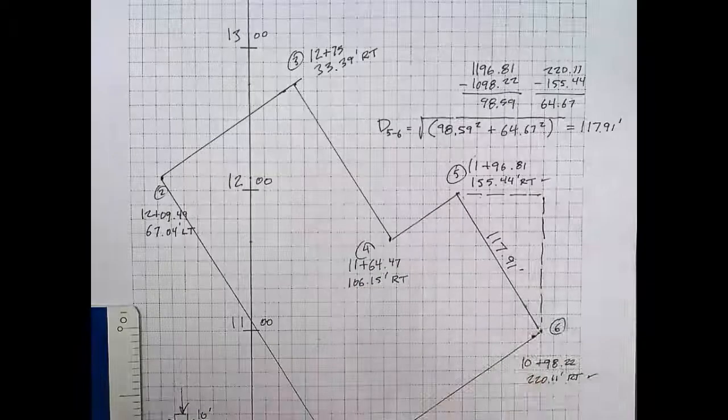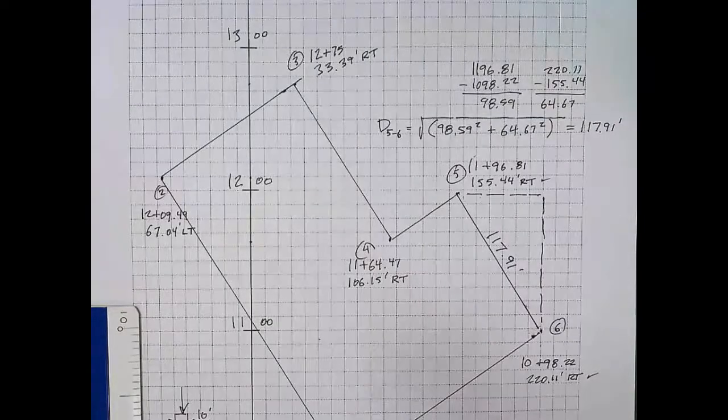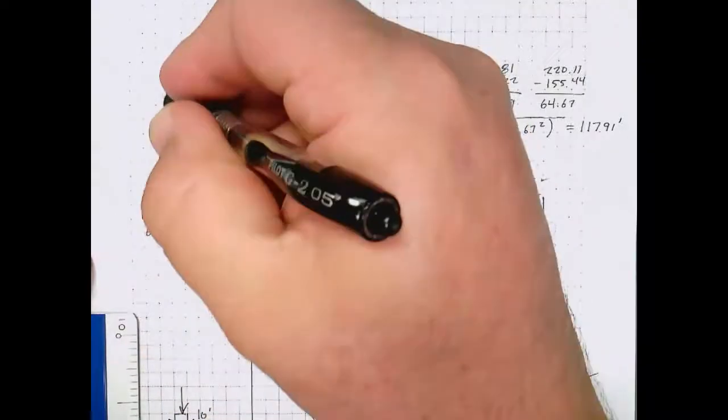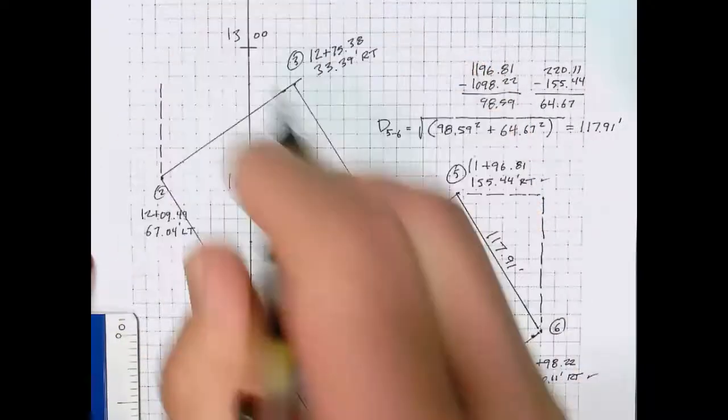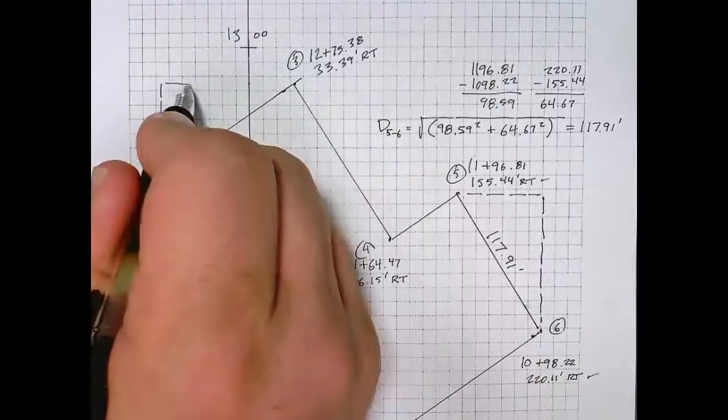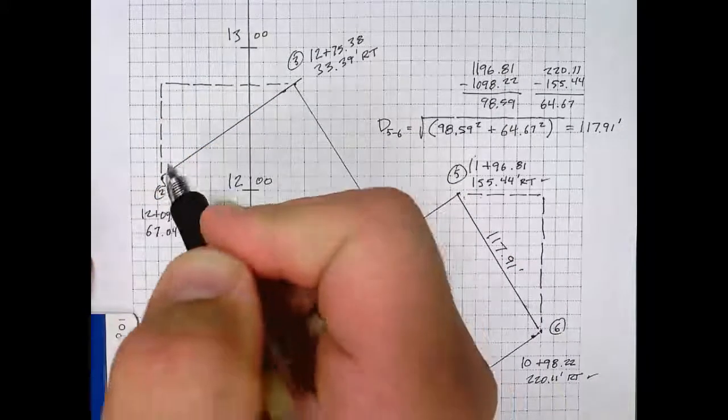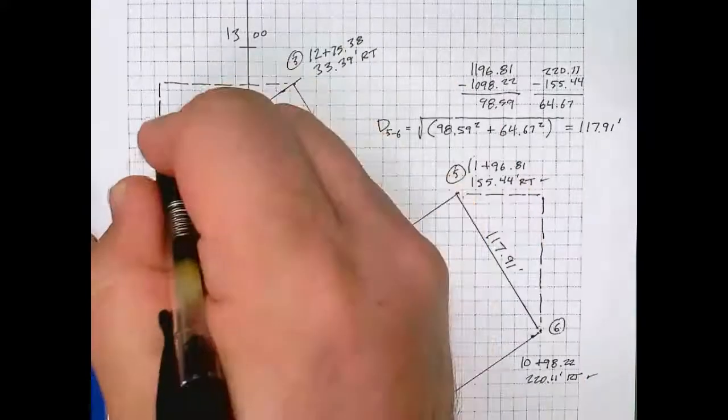Now what I need you to do is compute all the other five sides. But before you get started, let me show you something you need to catch on to. Because this particular side I'm drawing here crosses the baseline, you'll see that the distance in the direction of stationing that is parallel to the baseline is 65.89 feet.